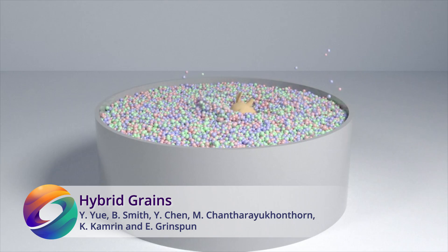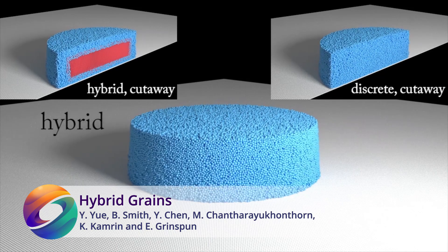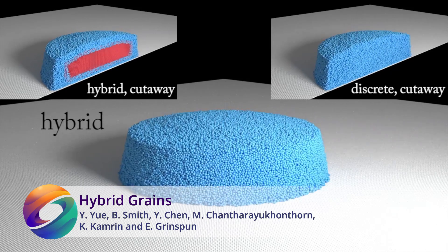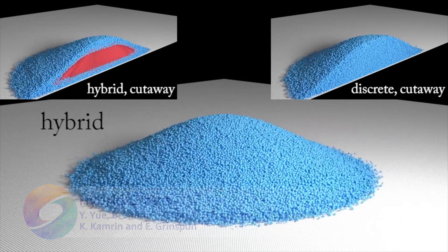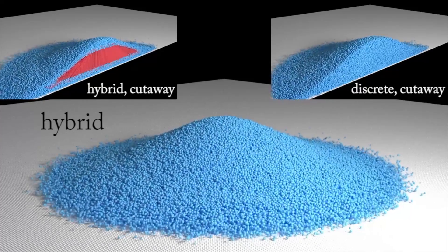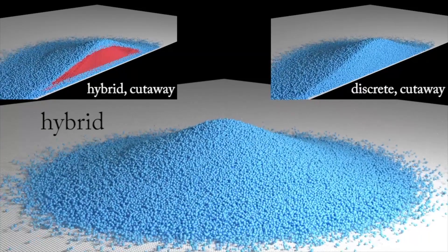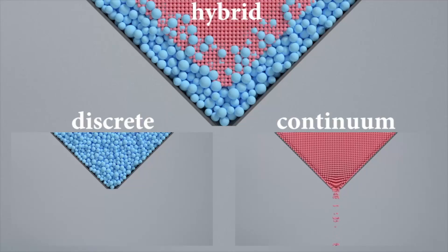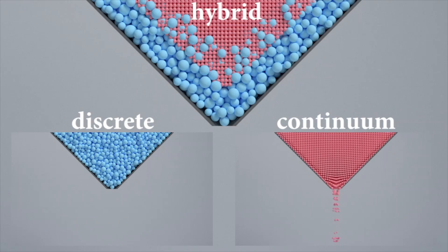Ever wanted to animate sand or other granular materials? This hybrid granular simulation method runs an adaptive discrete event simulation at the boundary and continuous simulation internally. It achieves large efficiency gains while capturing details such as clogging, bouncing and ballistic motion.